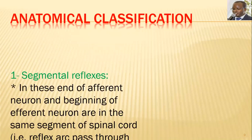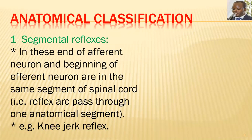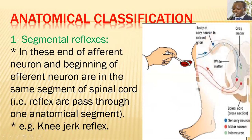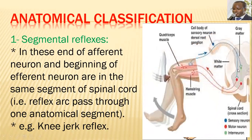Under anatomical classifications, segmental reflexes have both the end of the afferent neuron and the beginning of the efferent neuron in the same segment of the spinal cord. The reflex arc passes through one anatomical segment. An example is the knee jerk reflex, where sensory and motor information remains within the same segment at the level of the spinal cord.